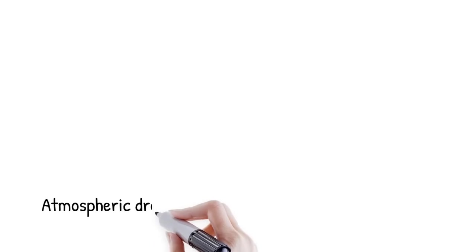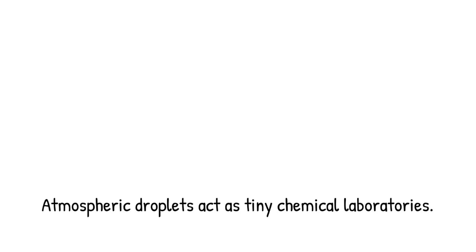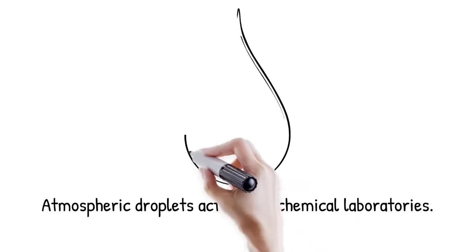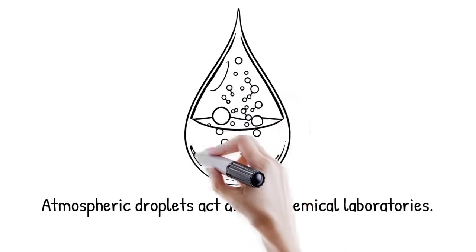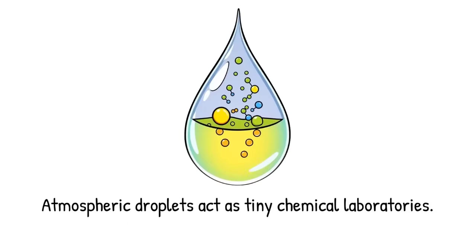Atmospheric droplets are believed to produce peroxide and radicals that affect ozone and cloud chemistry. It is like realizing that every raindrop is not just water, but a tiny active chemical laboratory.